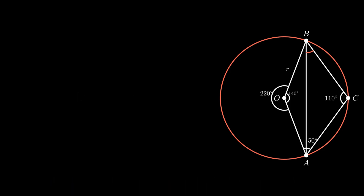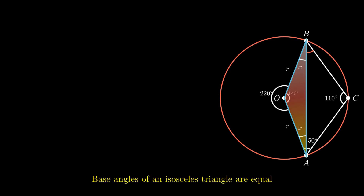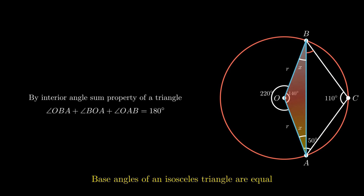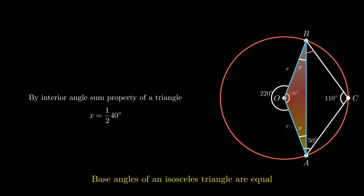Now in triangle AOB, side AO and side BO are radii of the circle and hence are equal. Therefore triangle AOB is an isosceles triangle. As base angles of an isosceles triangle are equal, let them be x. By using the interior angle sum property of the triangle, the sum of 140 and 2x equals 180 degrees. On transposing, 2x equals 40 degrees, which gives x as 20 degrees.